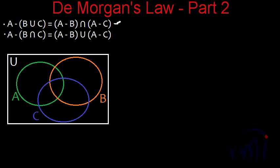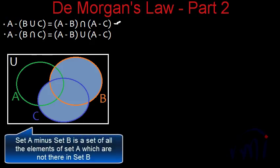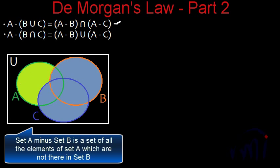So what is B union C? B union C is the area which represents set B and the area which represents set C combined. And what is A minus B union C? It will be all the elements of set A which are not in B union C. That means this portion shaded in light green actually represents A minus B union C, which is the left hand side of this law.